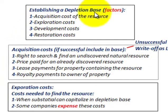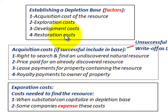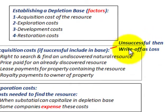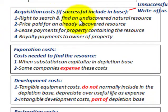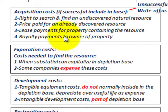Now, establishing the depletion base — the factors that would be included are: one, the acquisition cost of the resource; two, any exploration costs; three, developmental costs; and four, restoration costs. For acquisition costs, if successful you include it in the depletion base; if unsuccessful, it's often written off as a loss. Acquisition costs include: the right to search for an undiscovered natural resource, the price paid for an already discovered resource, lease payments for property containing the resource, and royalty payments to the owner of the property.